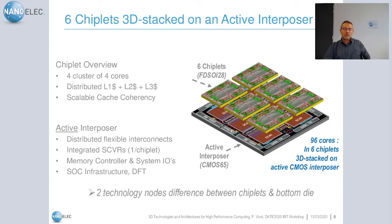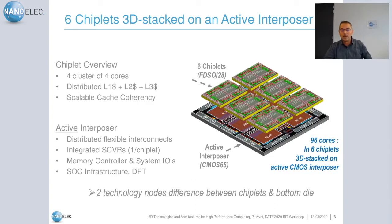The final image of the system shows the six chiplets in FDSOI 28nm technology stacked onto the active interposer in 65nm technology. In total we integrate 96 cores. The two different technology nodes provide sufficient performance — the 28nm for computing in the top die and the 65nm provides adequate analog partitioning and IO performance in the bottom die.